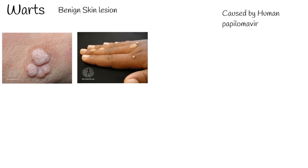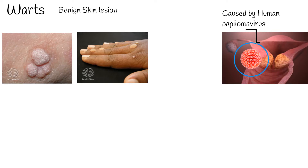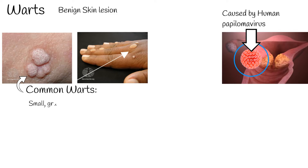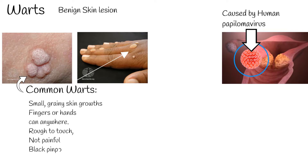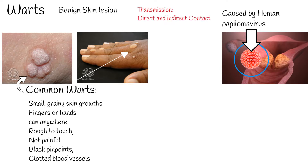Warts are prevalent benign lesions of the skin caused by the human papillomavirus, HPV. Warts can be different types. Common warts are small, grainy skin growths that occur most often on your fingers or hands, but can occur on other parts of the body also. Warts are rough to touch but not painful; however, warts on the feet can be painful. They are sprinkled with black pinpoints, which are small clotted blood vessels. Warts may be transmitted by direct or indirect contact. Events that disrupt the normal epithelial barrier increase the likelihood of developing warts.